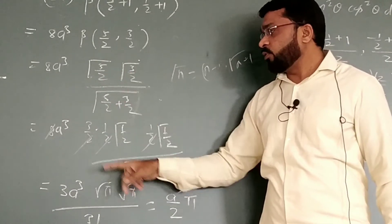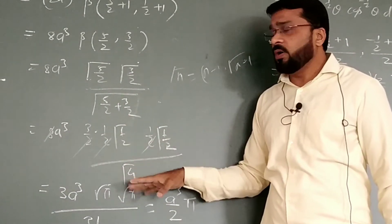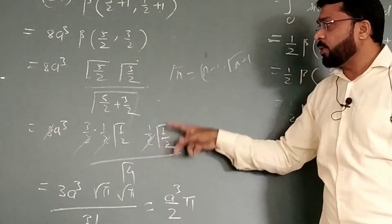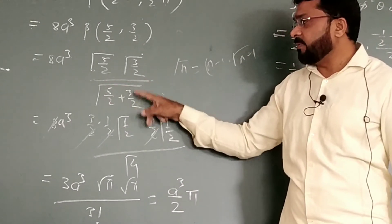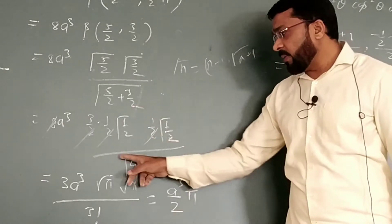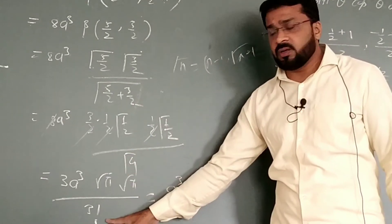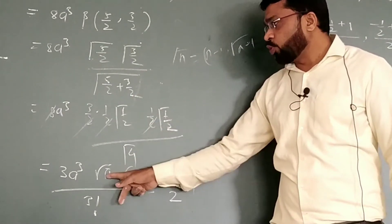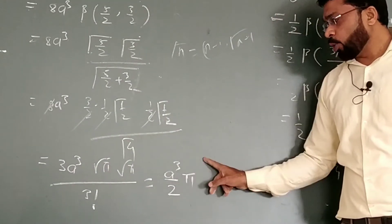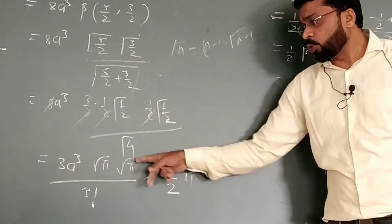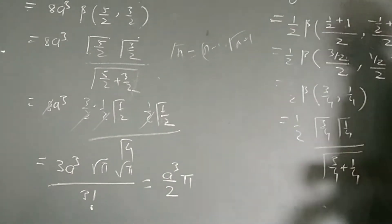Then we get these two quantities, gamma of 5/2 as 3/2, 1/2, gamma of 1/2, and gamma of 3/2 is 1/2, gamma of 1/2. Now, this is 2 LCM, 5 plus 3 is 8, 8 by 2 is 4. So gamma of 4, that is nothing but 3 factorial. Gamma of 1/2, 1/2 is root π, root π. Simplify the quantity, we are having the answer as a³ π/2, because root π, root π is π.